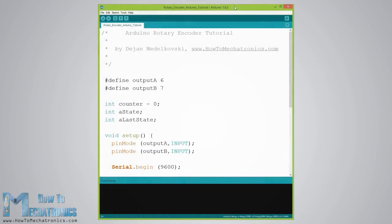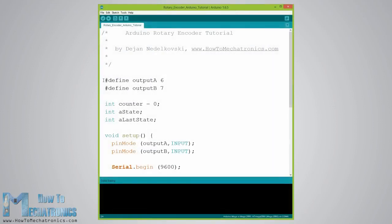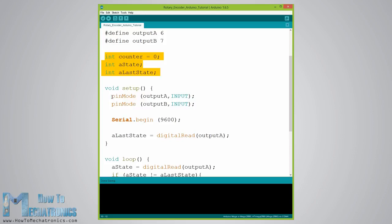Here's the Arduino code. First, we need to define the pins to which our encoder is connected and define some variables needed for the program. In the setup section, we need to define the two pins as inputs, start the serial communication for printing the results on the serial monitor, as well as read the initial value of the output A and put the value into the variable A last state.